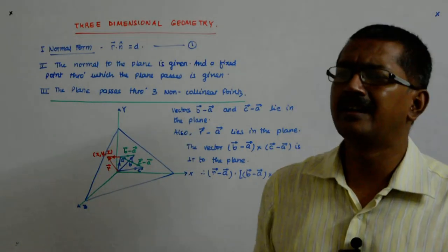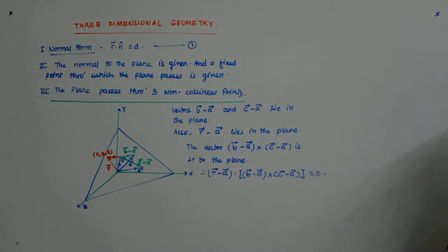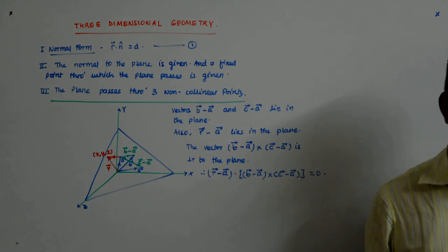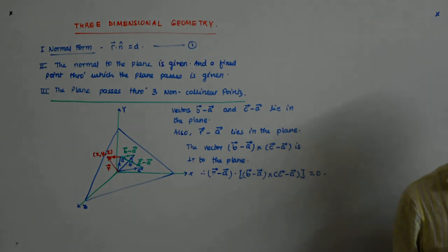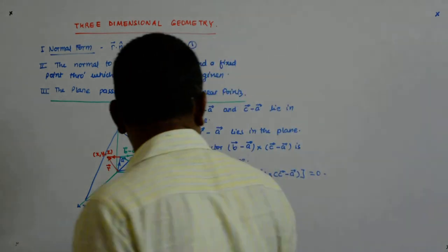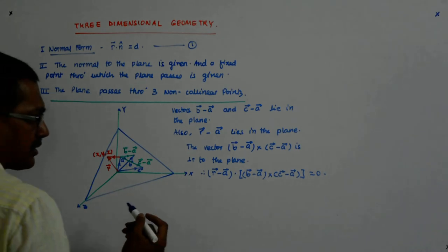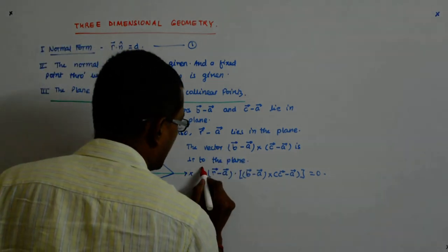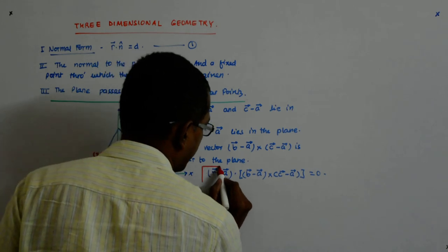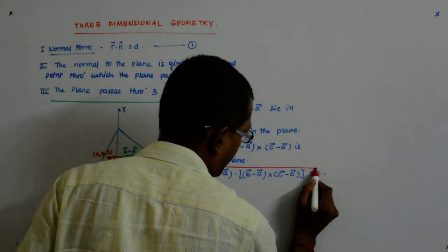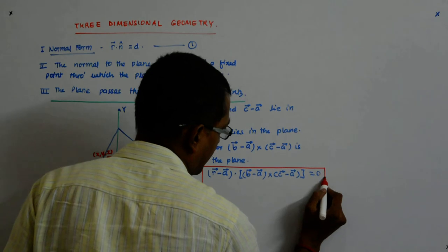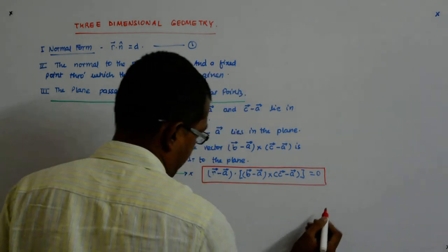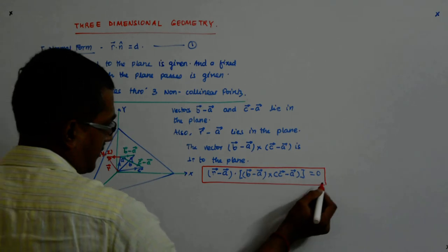It looks like a very unusual equation, but if you follow it through vectors it is very simple to understand. This is the vector form of the equation of a plane passing through three non-collinear points.